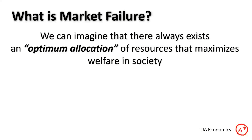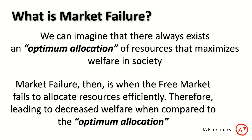Market failure — we can imagine that in society, in economics, with our scarce resources, there always has to exist an optimum allocation of resources: one allocation that maximises welfare in society. That is the optimum allocation because it's the best, most efficient allocation. Market failure is when the free market fails to allocate those resources efficiently, leading to lower welfare than we would expect at that optimum allocation.